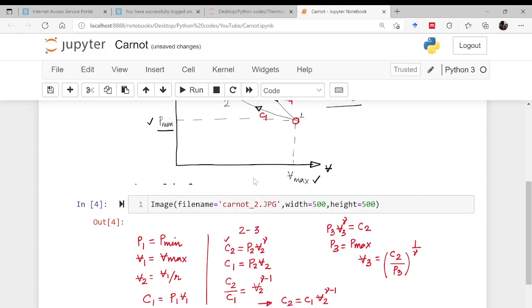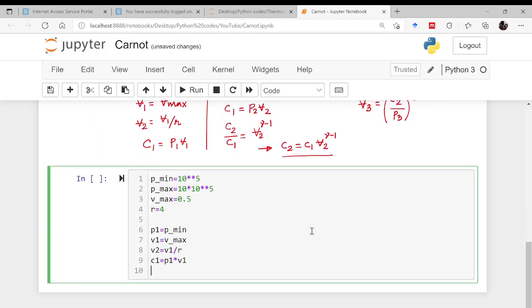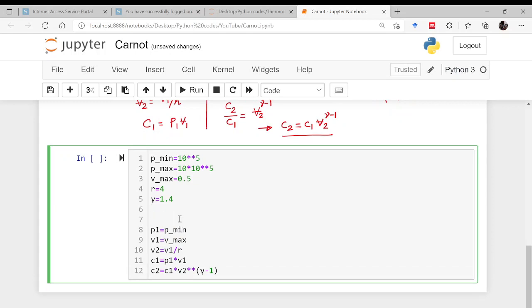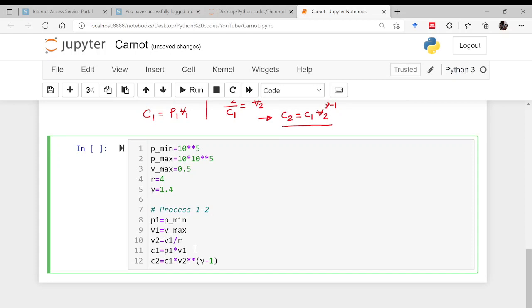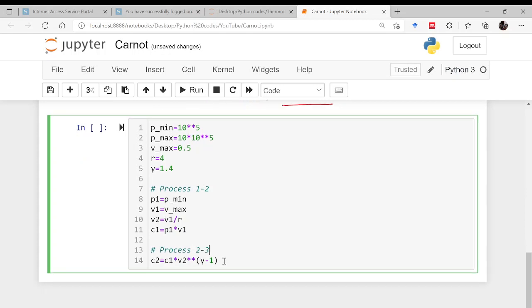Once this is done I have to go for process number 2 to 3 to evaluate C2. C2 is P2 V2 to the power gamma. So if you divide this you will be getting C2 as C1 times V2 to the power gamma minus 1. We have to define here what is gamma. Let us say it is 1.4. So for the process 1 to 2 you have this information. Now I have directly jumped into the process 2 to 3.